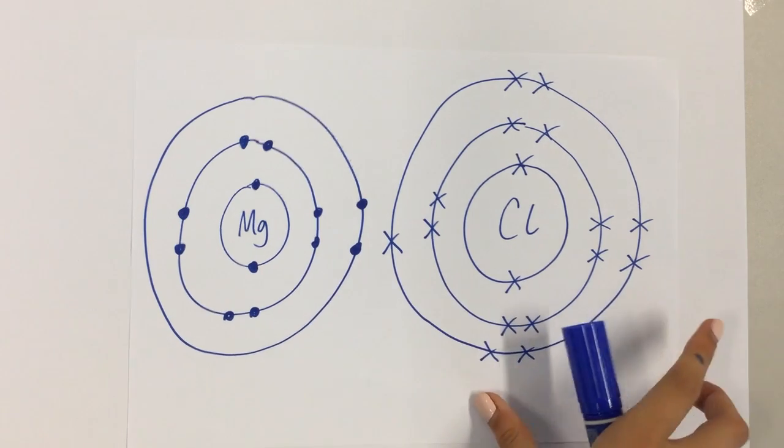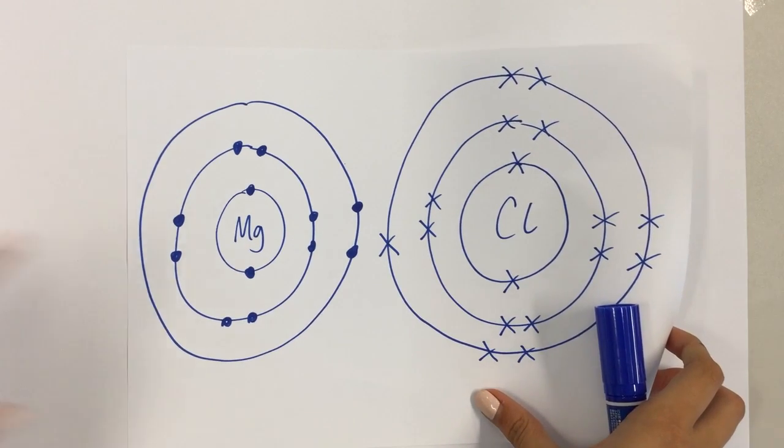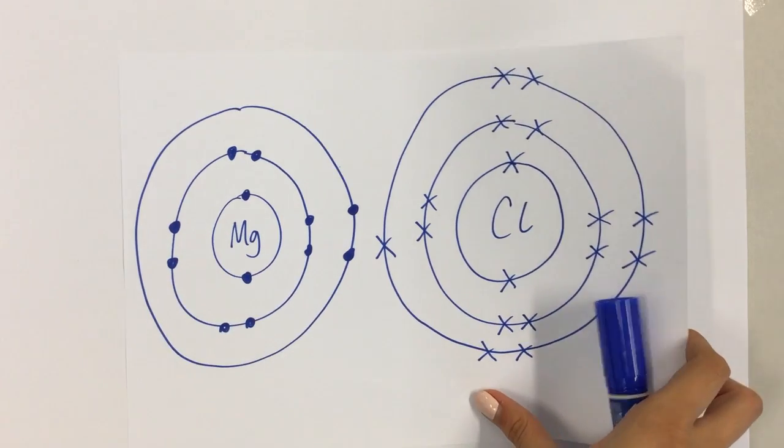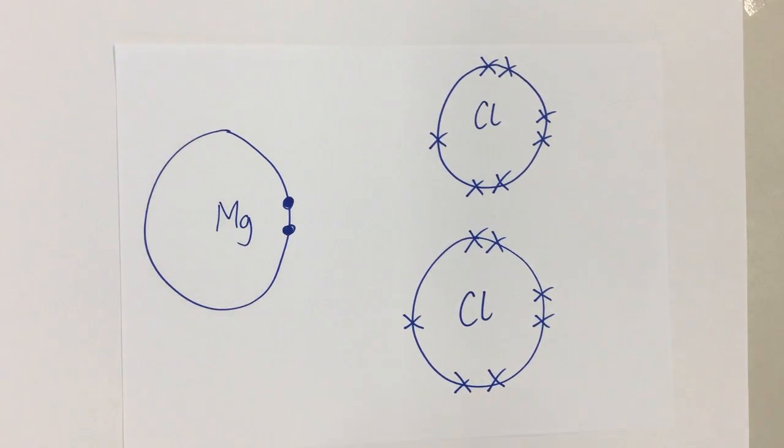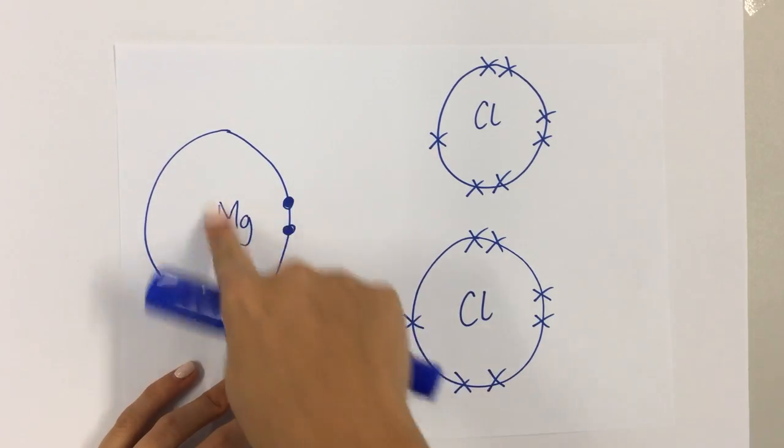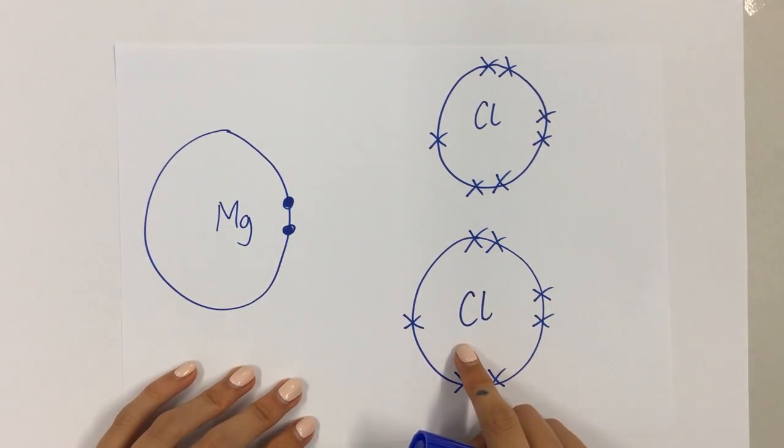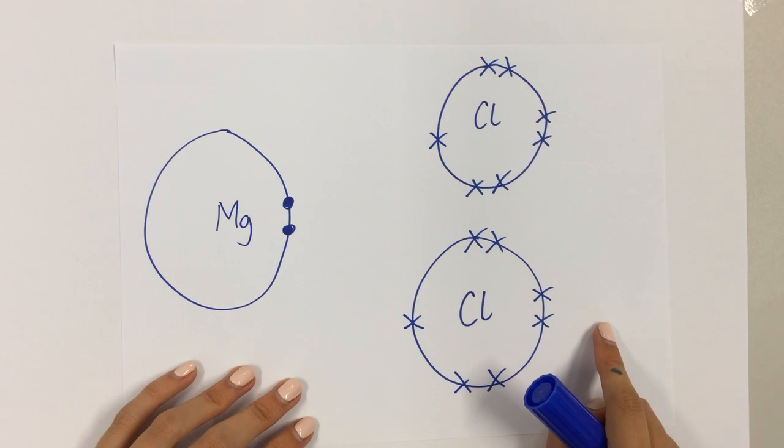The way that we solve this problem is that every magnesium bonds with two chlorines. Let's check this out. What I've done here is I've simplified things a little bit because I've only shown the outer shell electrons, only the outermost ones. The inner ones are still there, but for simplicity, I've just shown the outermost ones today.